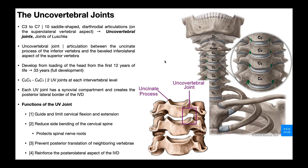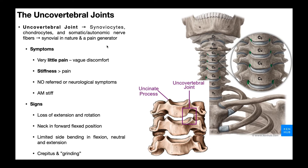The uncovertebral joint is a diarthrodial articulation — a diarthrosis — meaning synovial joint. Most sources are hesitant to call it a true synovial joint because it doesn't seem to have all the defining features, but it shares many: it contains synoviocytes that make up the synovial membrane and can secrete synovial fluid, and it also has chondrocytes for cartilage production. It also has nerve fibers from both the somatic and autonomic nervous systems, making it a potential pain generator for the cervical spine.